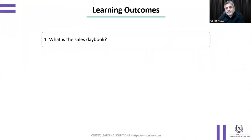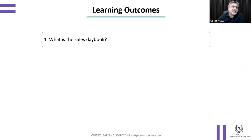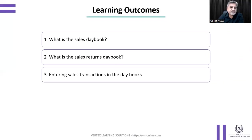In brief: the sales daybook is a book in which you record credit sales only. Cash sales are not included here — cash sales will be recorded in the cash book. The sales return daybook will include those goods which customers have returned to us.